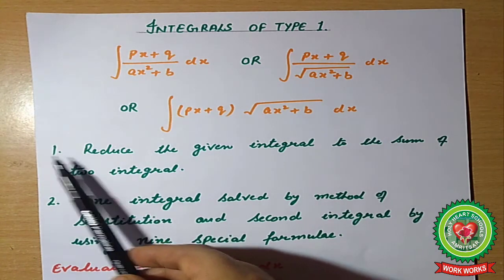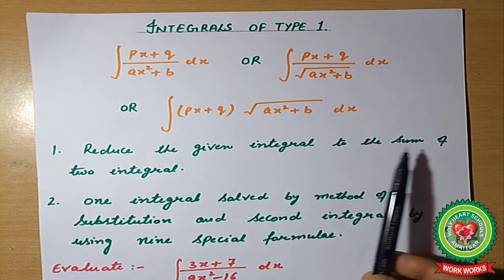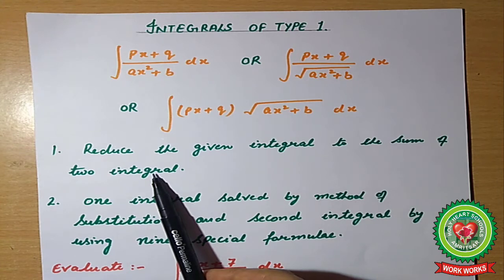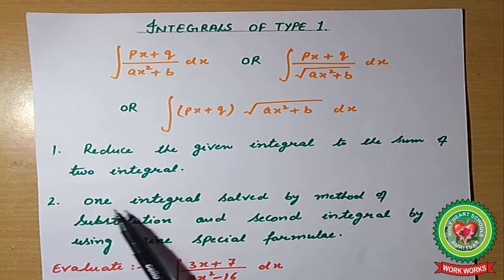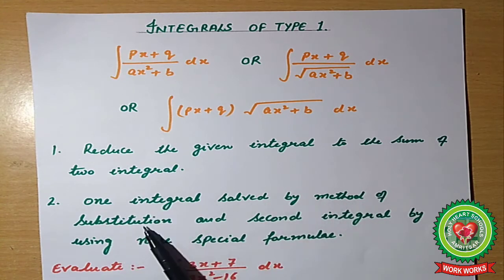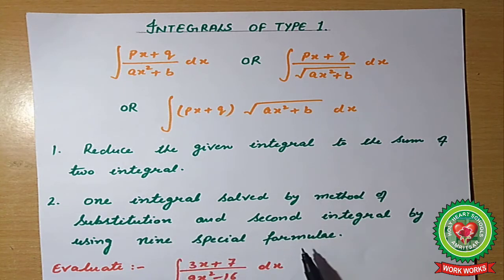To solve this type of question, we will reduce the given integral to the sum of two integrals — we will divide the integral into two parts. One integral we will solve by the method of substitution, and the second integral by using the 9 special formulae.